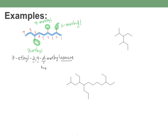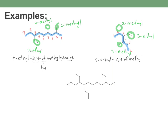For the next example, the longest chain is 6 carbons — hexane. Numbering to give the lowest substituent number, I go in the direction that places the first substituent at carbon 2 rather than 3. I have a 3-ethyl and a 2-methyl. Putting it together: 3-ethyl-2-methylhexane.